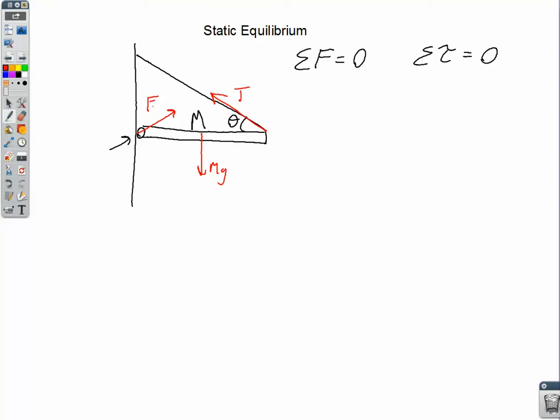Let's call it F sub W. And so, I'm going to pick that as my axis of rotation about which I'm going to find the torques. And, the nice thing about that is that it takes the torque from the wall force completely out of the problem.